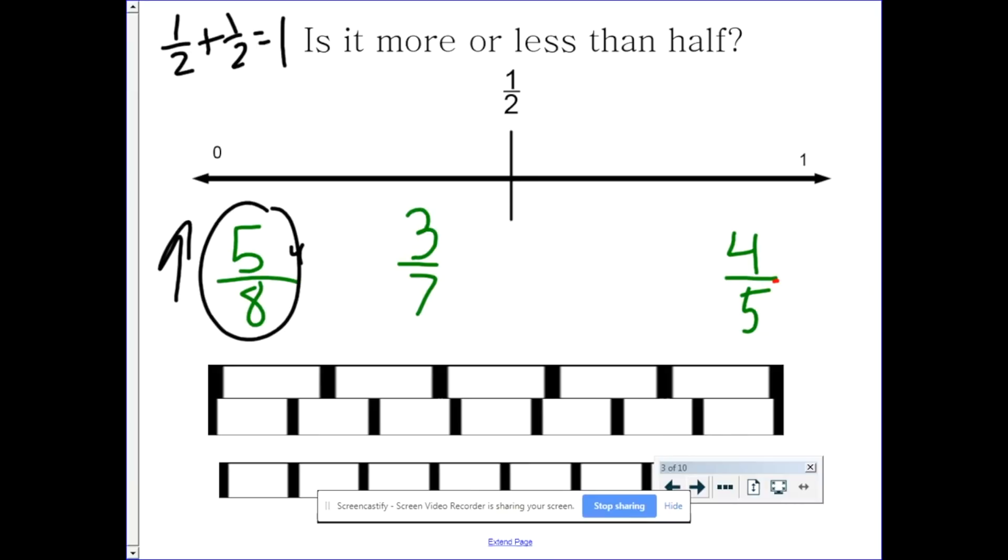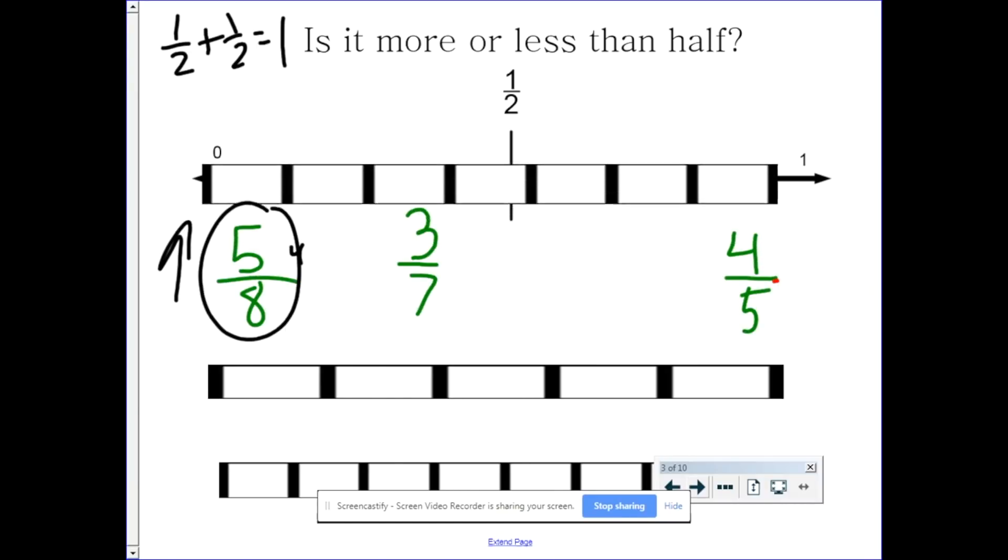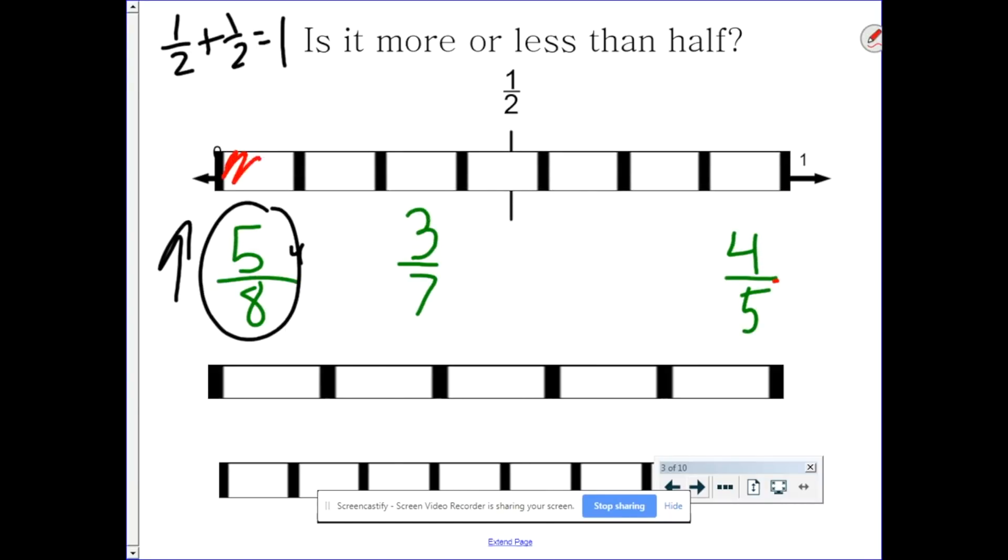All right, but what about three-sevenths? Let's go ahead and move our three-sevenths up there, and let's shade it in. One, two, three. Notice that on our number line, it's not quite the half. So we know that it's less than half. Also, there are less boxes shaded in than aren't shaded. So if there's less boxes shaded in than aren't shaded, we know that we're not quite halfway there.